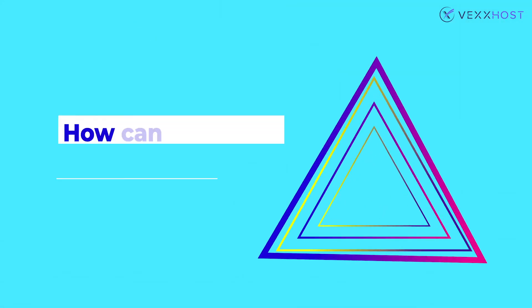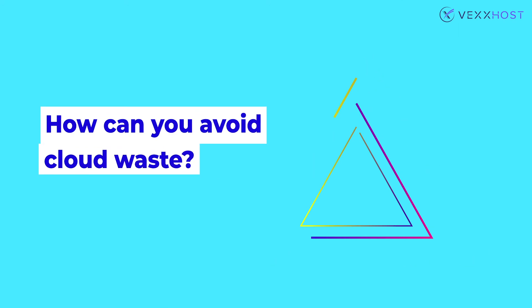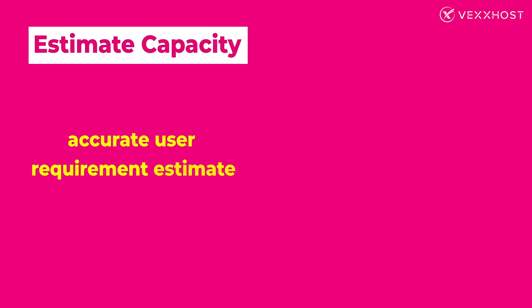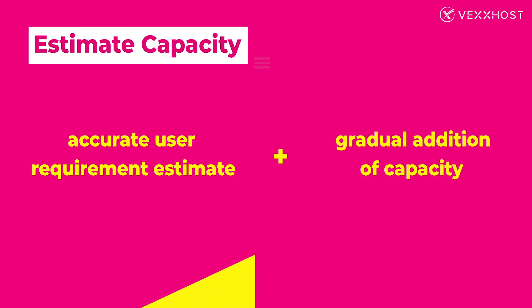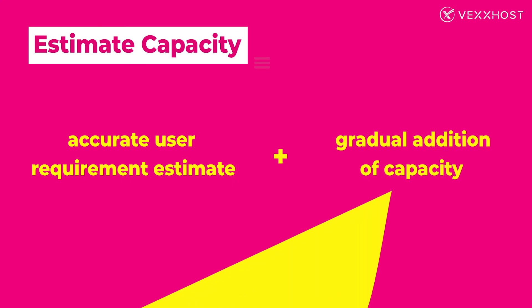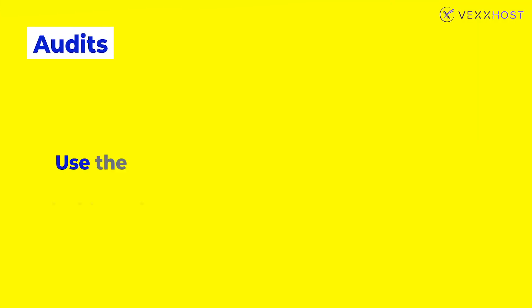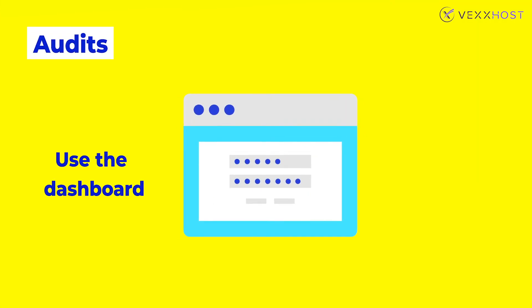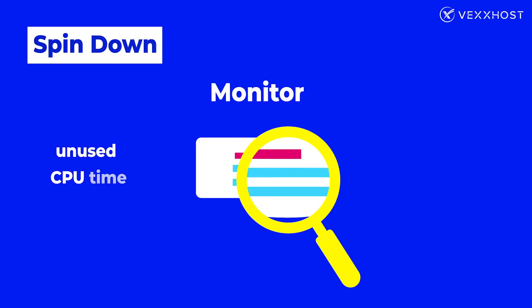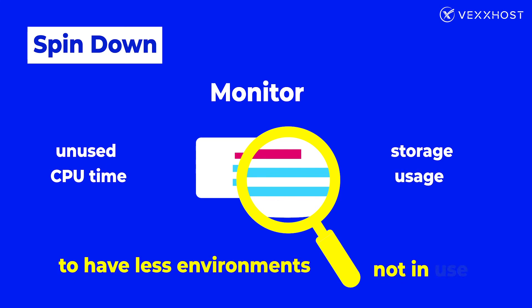So, how can you avoid cloud waste? Estimate capacity: estimate your user requirements more accurately and add capacity gradually instead of in bulk to grow both your business and your cloud environment. Audits: use the dashboard that comes with the cloud platform to track down idle resources easily. Spin down: proactively monitor unused CPU time and storage usage to cut down on environments that are no longer in use.